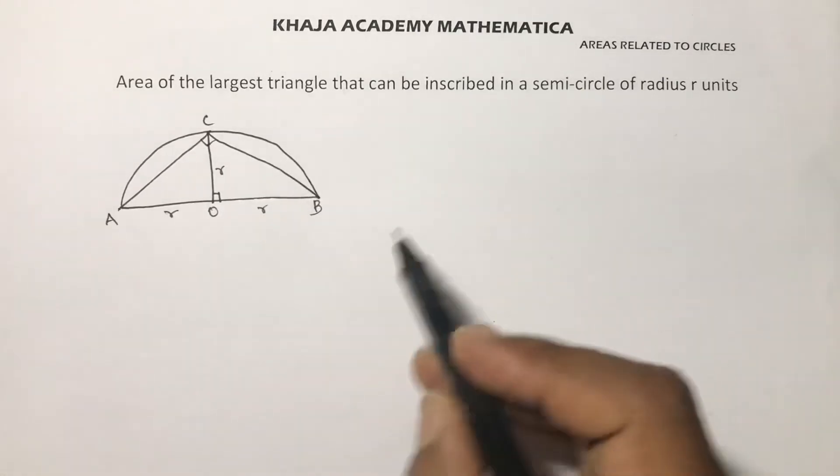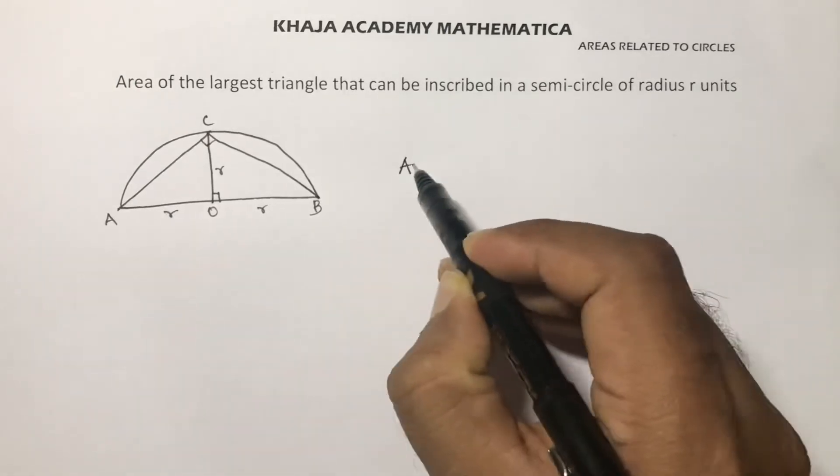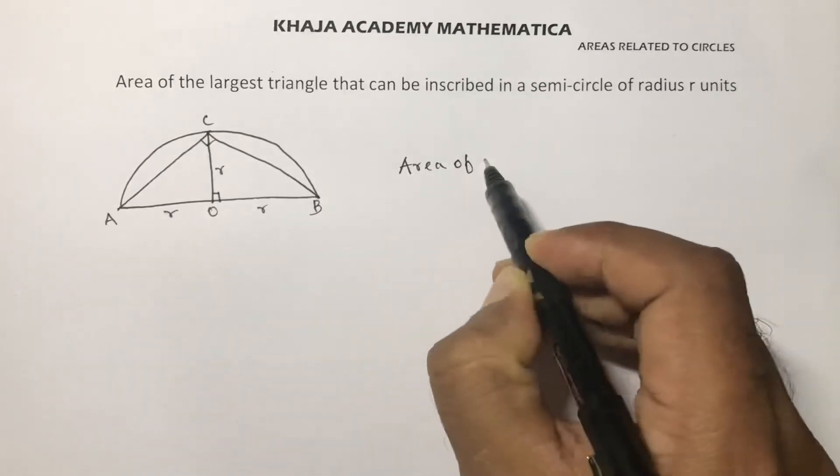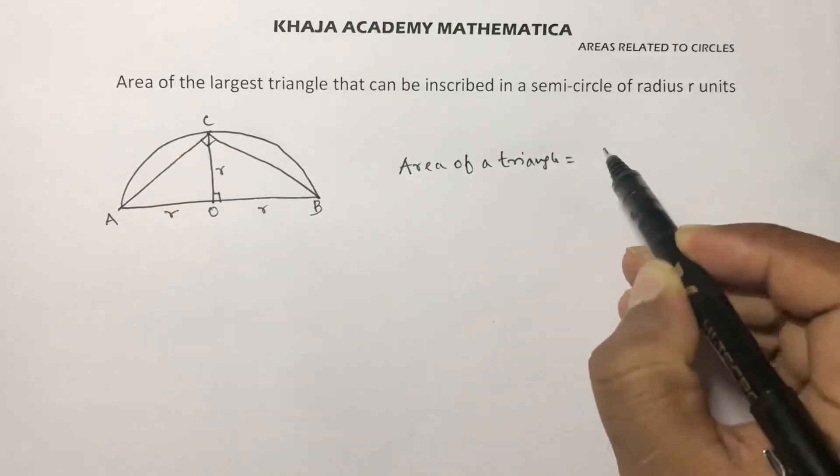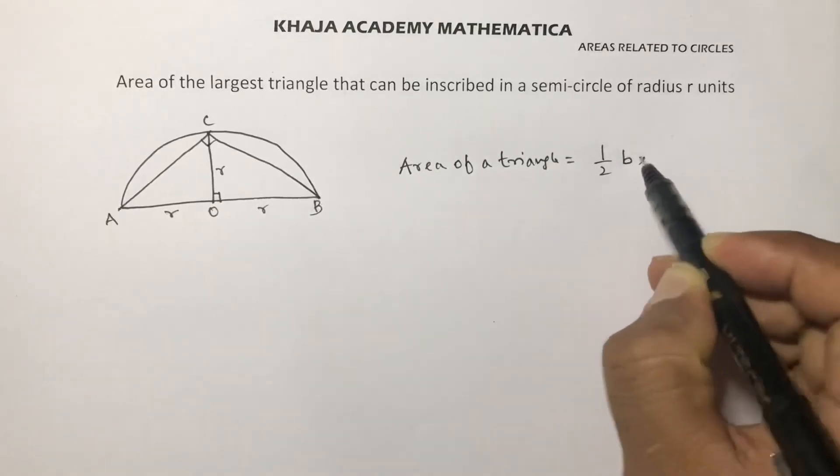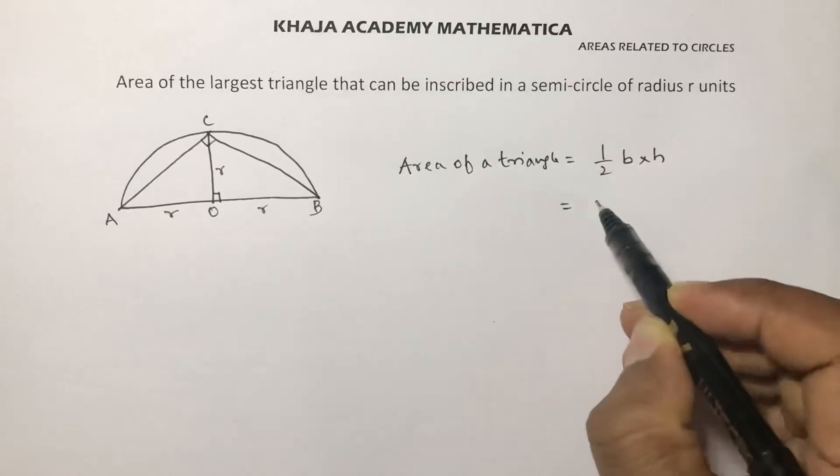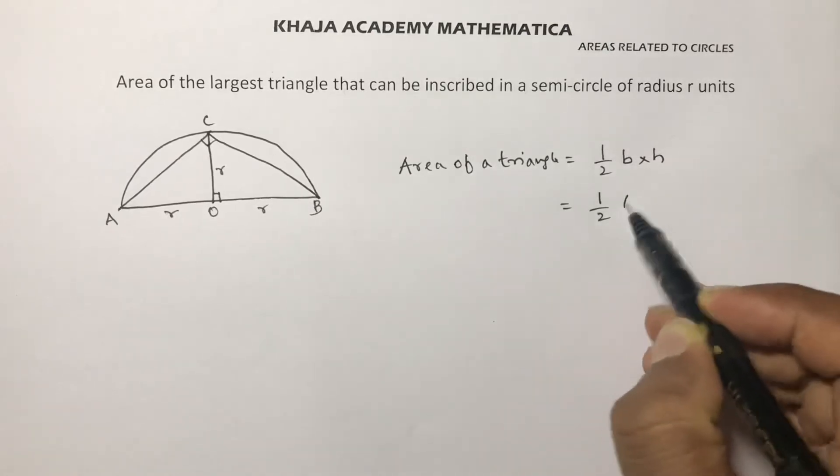Area of a triangle is half base times height. The base is AB.